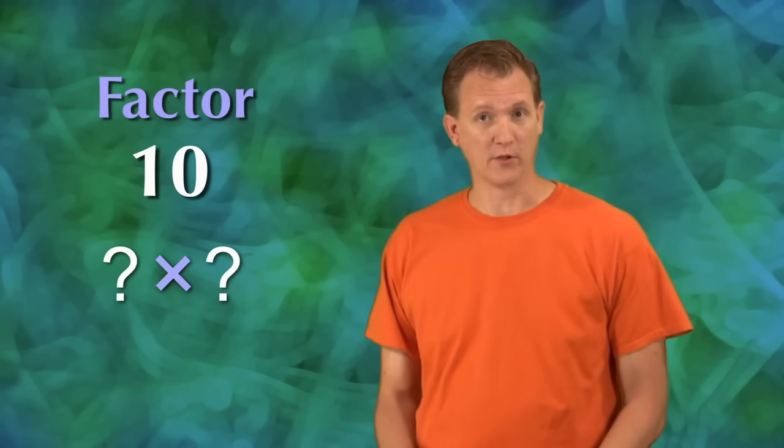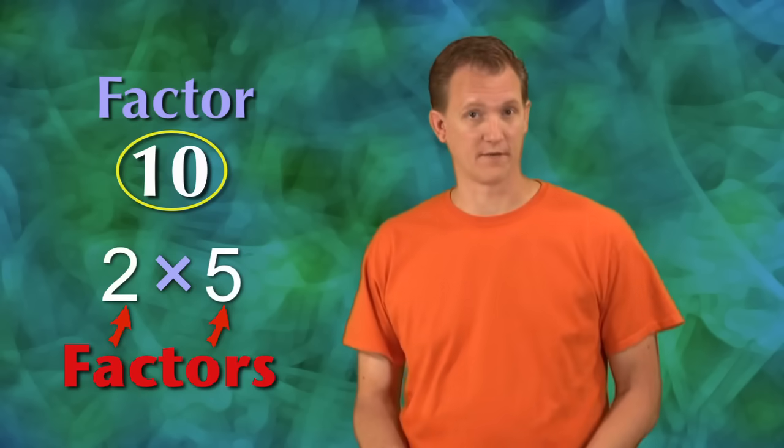For example, let's say you're asked to factor the number 10. That means you need to figure out what numbers you could multiply together to get 10. If you know your multiplication table, you'll remember that 2 times 5 equals 10. That means that 2 and 5 are factors of 10. So factors are just the parts of a multiplication problem, and factoring is figuring out what those parts are.